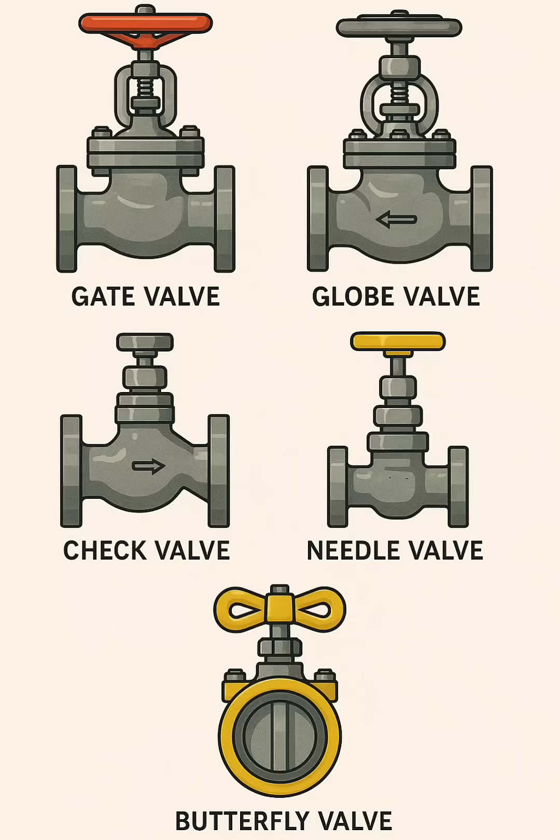Flow: More pressure drop compared to gate valve because of the change in flow direction. Use: Good where flow control and frequent operation are needed, e.g. choke lines, cooling systems.